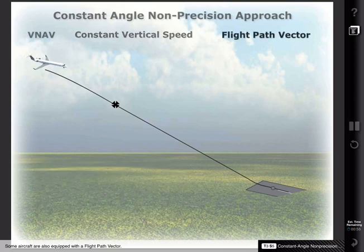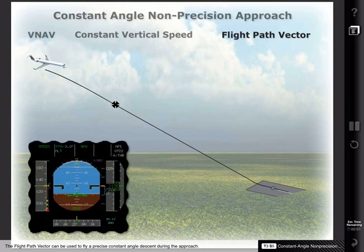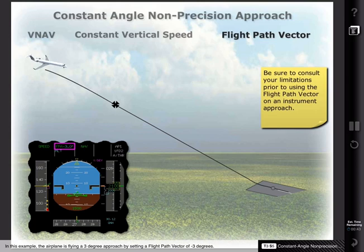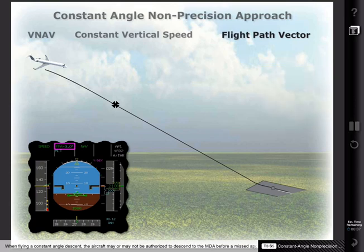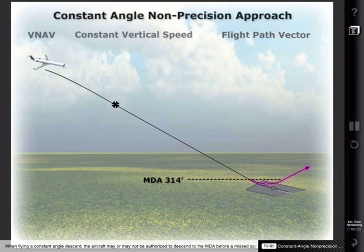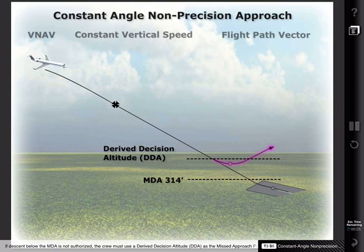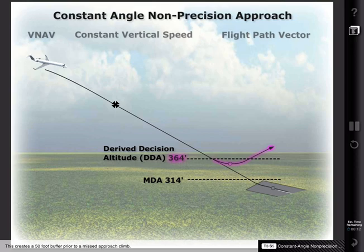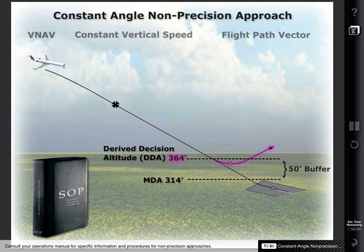Some aircraft are also equipped with a flight path vector. The flight path vector can be used to fly a precise, constant angle descent during the approach. In this example, the airplane is flying a 3-degree approach by setting a flight path vector of minus 3 degrees. When flying a constant angle descent, the aircraft may or may not be authorized to descend to the MDA before a missed approach is executed. If descent below the MDA is not authorized, the crew must use a derived decision altitude, or DDA, as the missed approach point. The DDA is figured by adding 50 feet to the MDA, creating a 50-foot buffer prior to a missed approach climb. Consult your operations manual for specific information and procedures for non-precision approaches.